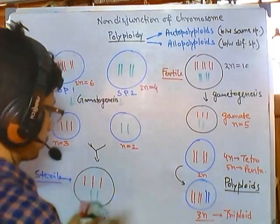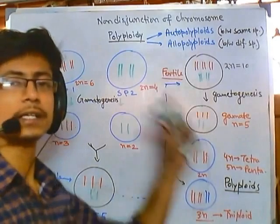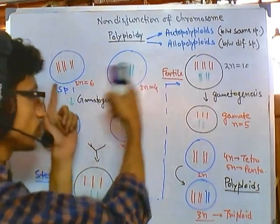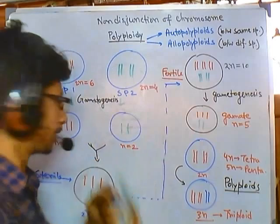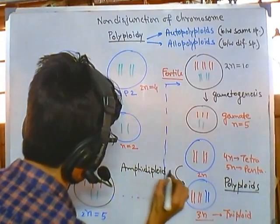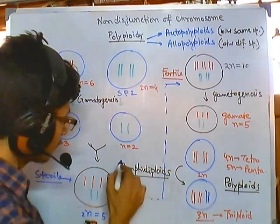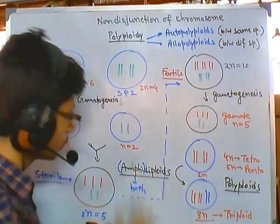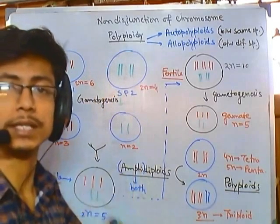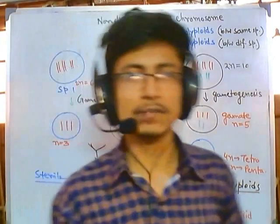Cells which have had their chromosome number duplicated from the fusion of two different species are termed amphidiploids. It is called amphidiploid because 'amphi' means both — this diploid situation arises due to the fusion of both species together. That is all about allopolyploidy. Thank you.